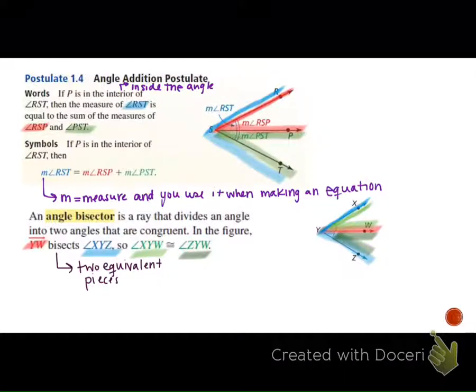Angle XYZ is cut into two equal pieces. Angle XYW is congruent to angle ZYW, meaning those two are the same. An angle bisector cuts an angle into two equivalent pieces, and you can set those equal. Addition postulate says you add them together to get the total.